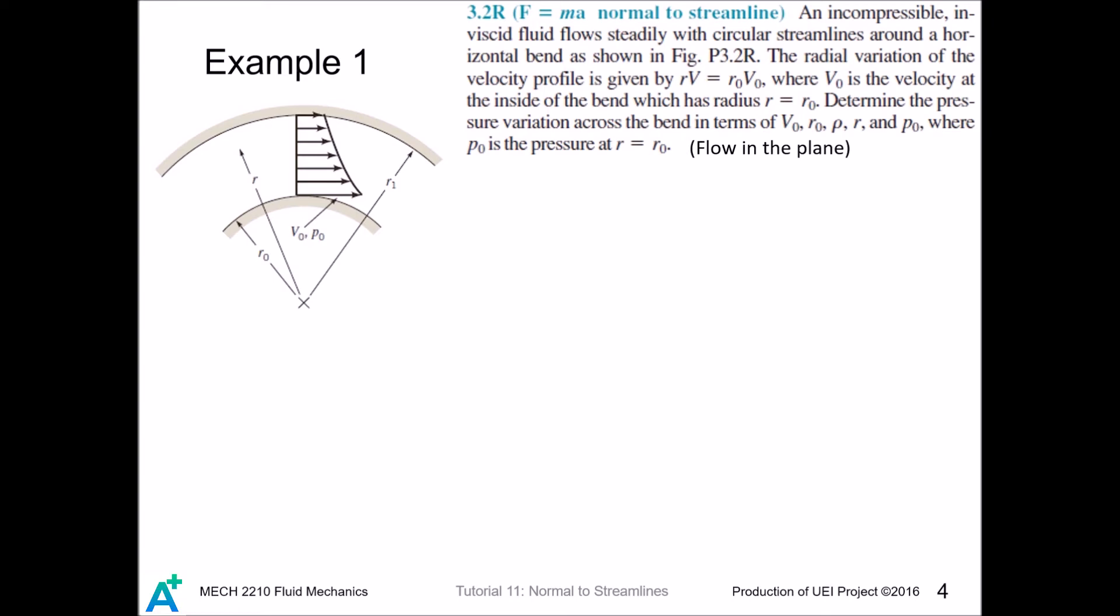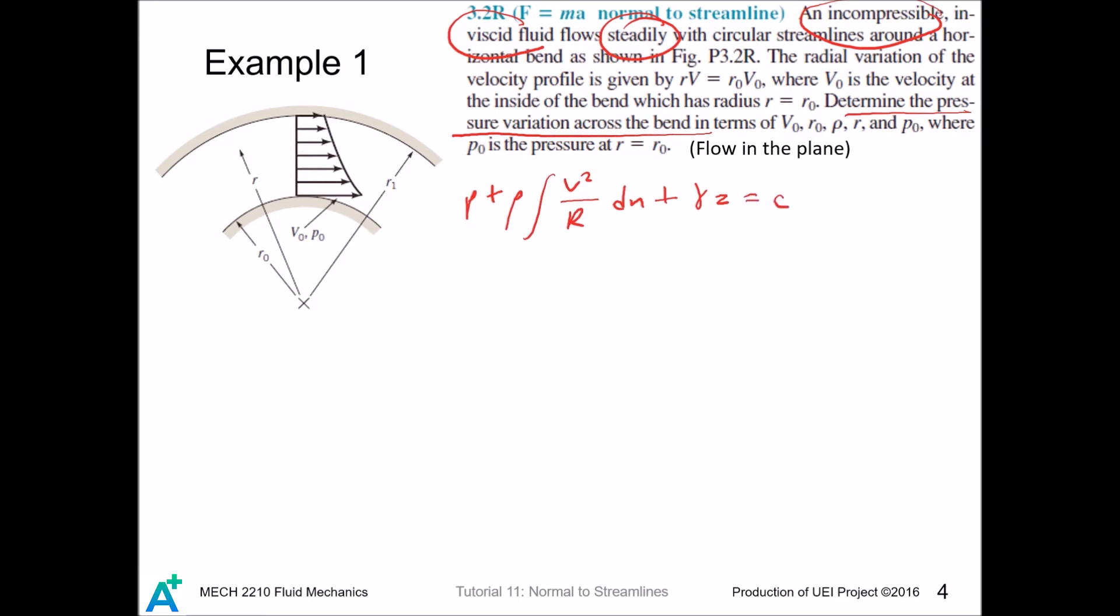Now we do a quick example to illustrate how to use this equation. We first make sure that we can apply this equation. The flow is incompressible and inviscid ideally, and we have to determine pressure variation across streamline. We write down p plus rho integral v squared divided by r dn plus gamma z equals constant. In fact, this flow is in the xy plane, so there is no gravity and we can neglect this term.